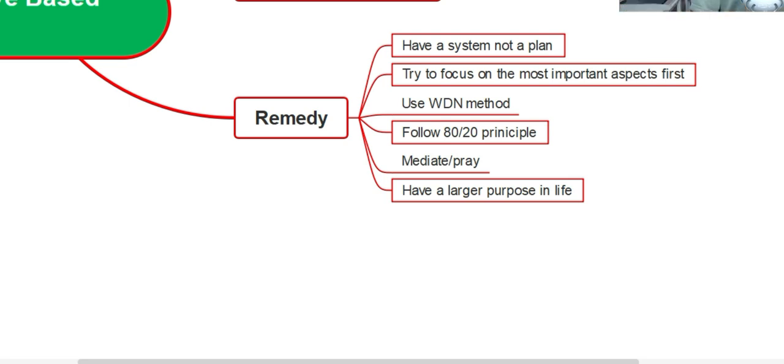Second one, try to focus on the most important thing. For example if you're studying a paper like literature, you cannot study everything, that only happens in utopia. So you have to focus on the important things. I call this the WDN method.